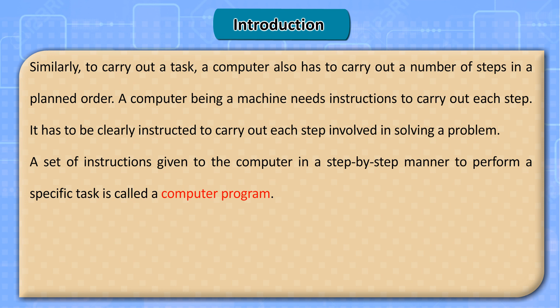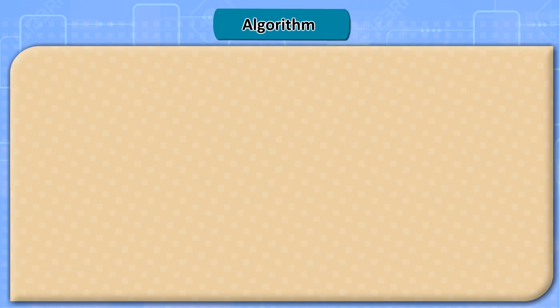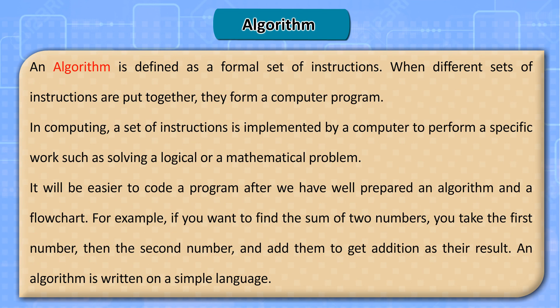An algorithm is defined as a formal set of instructions. When different sets of instructions are put together, they form a computer program. In computing, a set of instructions is implemented by a computer to perform a specific task, such as solving a logical or a mathematical problem.